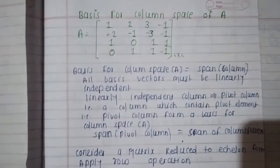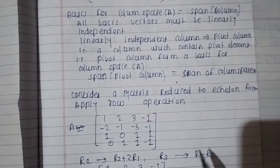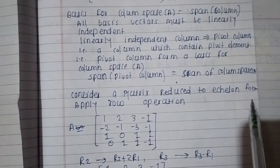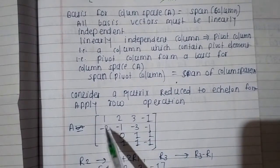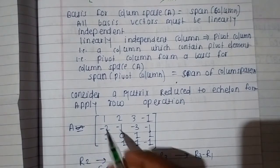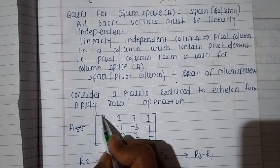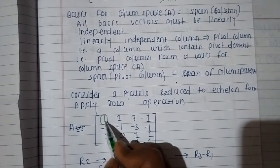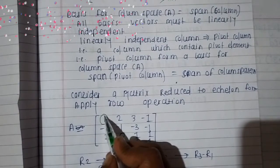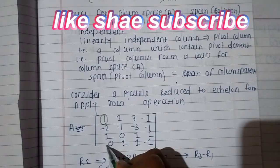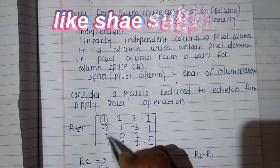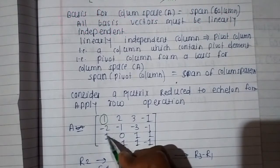To find the basis for column space, we reduce the given matrix to row echelon form by applying row operations. The first non-zero entry should be one — here it is already one. If it is not one, we try to make it one. Then all elements below this leading one in that column should be zero.